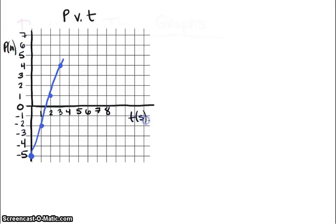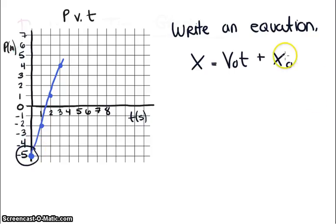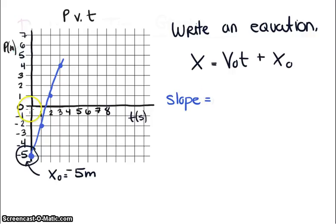Let's try an example. We're asked to write an equation for the motion of an object given a graph. I'll start by writing out the equation: x equals v_initial times time plus x_initial. Looking at the graph, the y-intercept is negative 5, so x_initial equals negative 5 meters. Next, I need to find the slope. I'll choose two points on the line of best fit: one at 2.5 seconds and 3 meters, and another at 1.5 seconds and 0 meters.